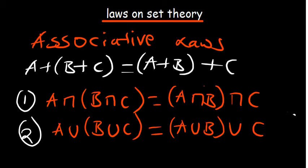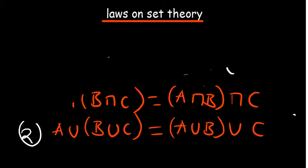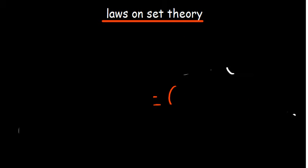Associative laws are somehow similar to commutative laws, except they focus on what you do first — the grouping matters. So these are the associative laws. Now let's talk about what we call distributive laws, which are also a very important aspect.